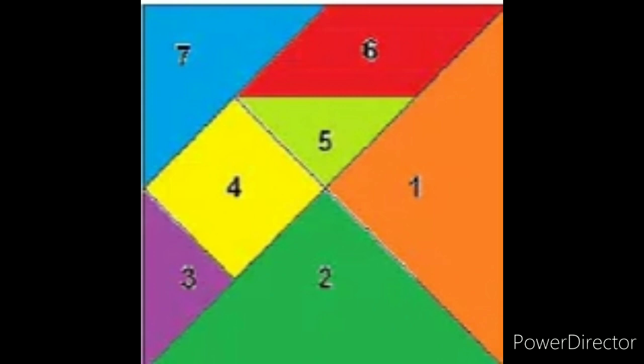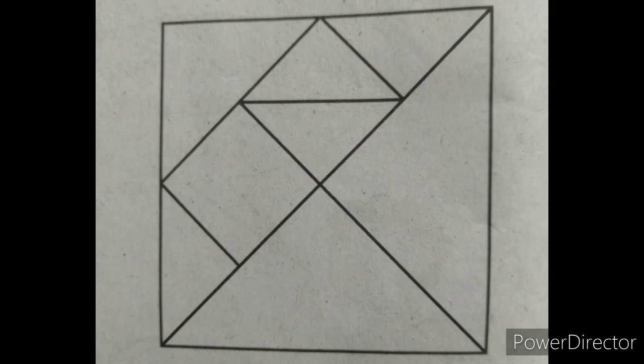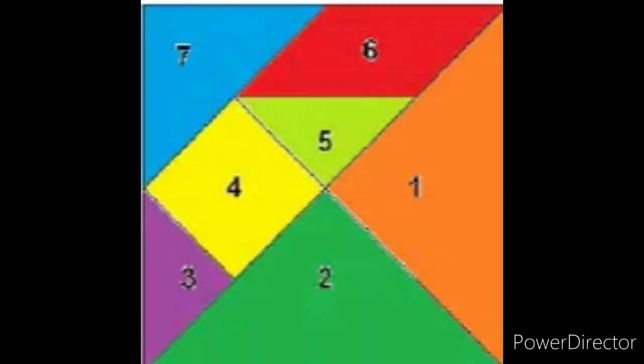These 7 pieces are made in the same way. This is Tangram Gaming. Now we will explain how many pieces there are. 7 pieces are made: 5 triangles, a square, and a parallelogram.